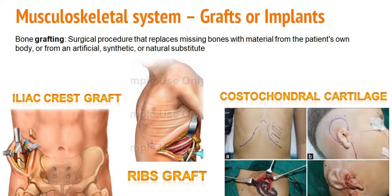What is autograft? Autograft means the physician will excise healthy material from the patient's own body and place it to the defected area of the patient. What is allograft? The physician will excise healthy material from one person and place it to another person. You can see these are the example pictures.